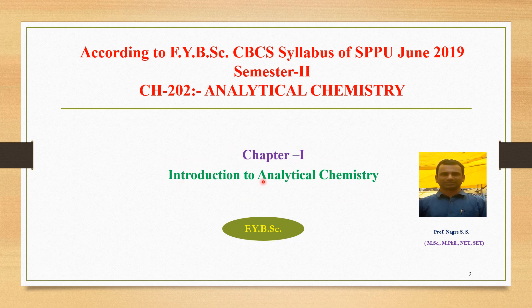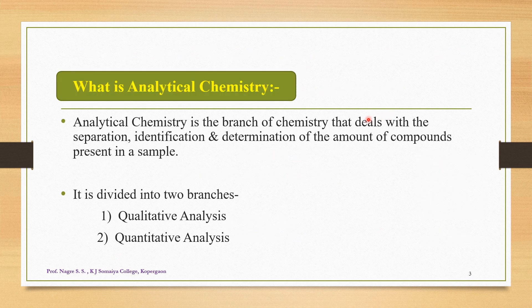This is the first chapter from chemistry second paper CH202. As far as the title of this paper, analytical chemistry is to be considered, the total study involved in this particular paper is regarding the analytical branch of chemistry. First of all, we are interested to know about what is analytical chemistry. Analytical chemistry is the branch of chemistry that deals with the separation, identification, and determination of the amount of compounds present in a sample.